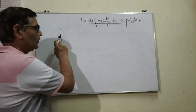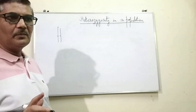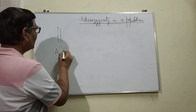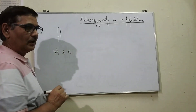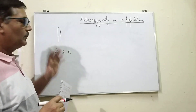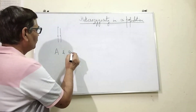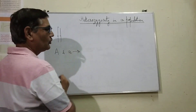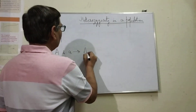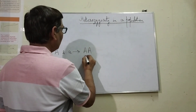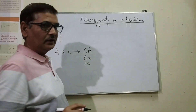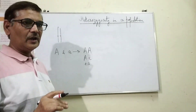Now, this locus, if it is represented by two alleles — that is capital A and small a — these are two alleles which may be present at this locus. Due to these two alleles, three genotypes will be possible: capital AA, capital A small a, and small a small a. These three genotypes will be there.